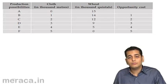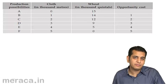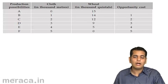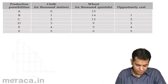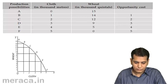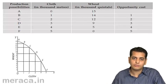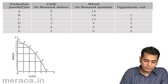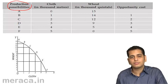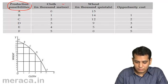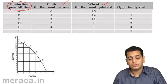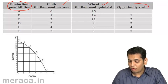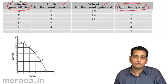Next, we move on to how do we derive this curve? How do we develop this production possibility curve on the axis? Now we have a schedule showing us various possibilities of production — how many units of cloth are we producing, how many units of wheat are we producing, and what is the opportunity cost?